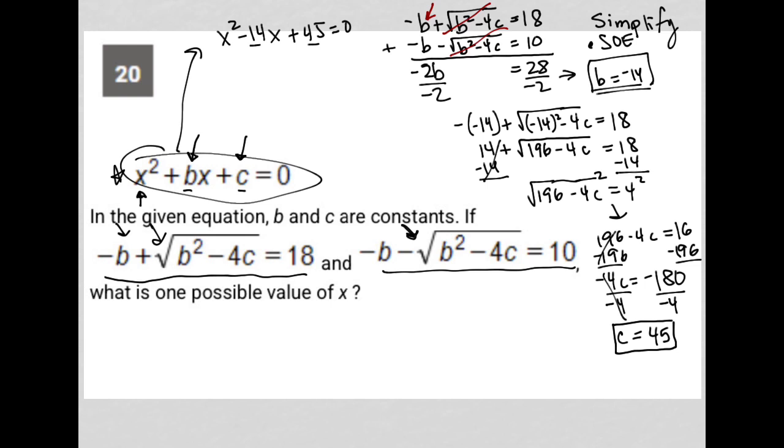I'm looking for two factors of 45, two numbers I multiply that equal 45 but add up to -14. That's how I factor a trinomial. Those two values are -9 and -5. So I'd have (x - 9)(x - 5) = 0.